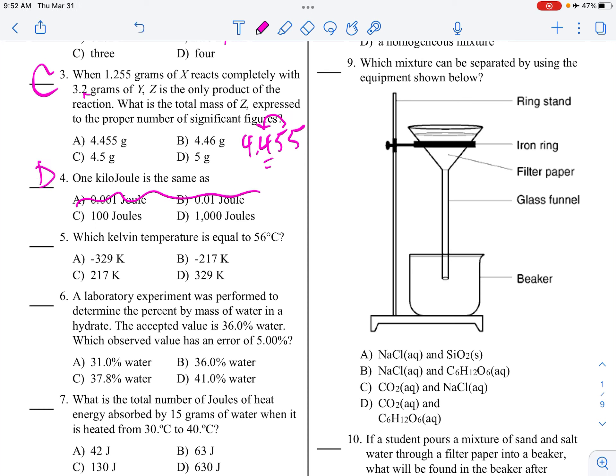A lab experiment was performed to determine the percent by mass of water in a hydrate. The accepted value is 36%. Which observed value has an error of 5%? So the formula, table T, here we go. So percent error is measured value minus accepted, divided by accepted times 100. Make sure it's always positive and your units are percent sign. So we're looking for 5% error.